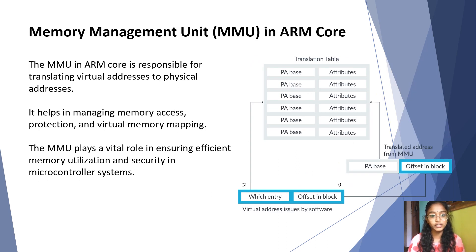The MMU in ARM core is responsible for translating virtual addresses to physical addresses. It helps in managing memory access, protection, and virtual memory mapping. The MMU plays a vital role in ensuring efficient memory utilization and security in microcontroller systems.